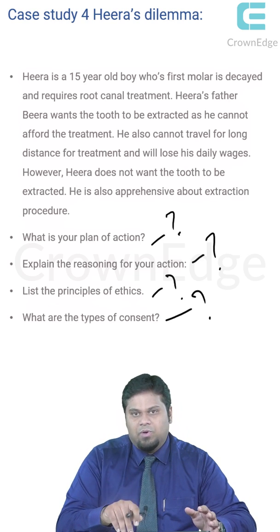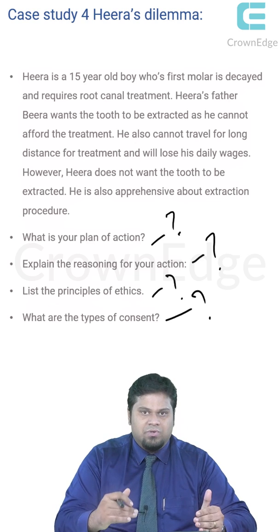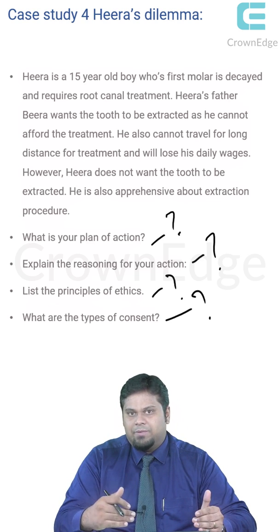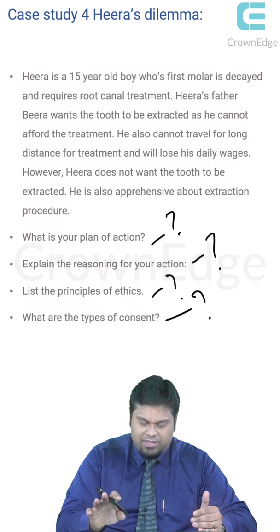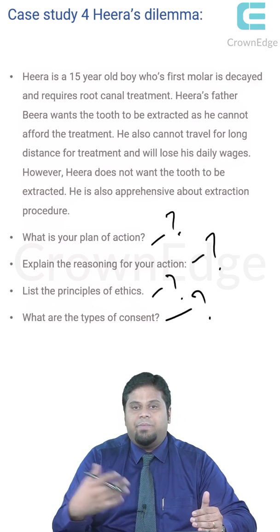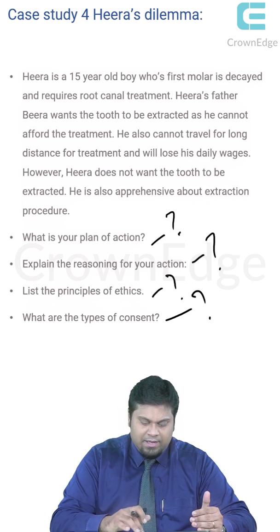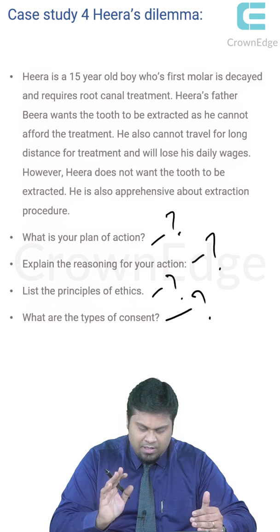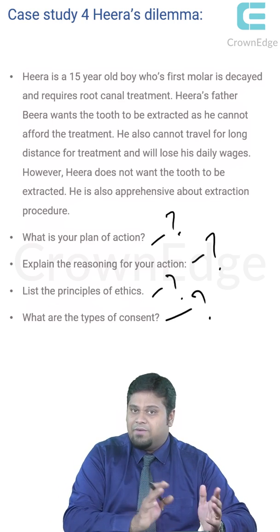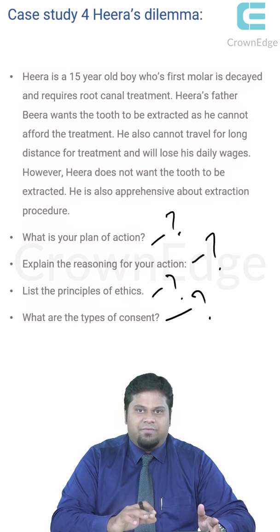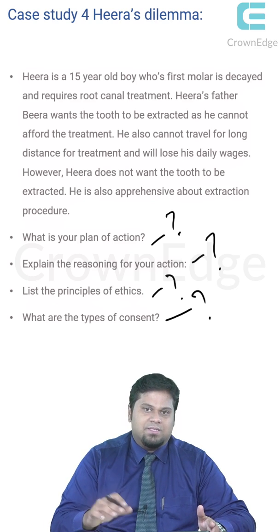Hira is a 15-year-old boy whose molar is decayed and requires root canal treatment — the doctor's recommended judicious decision. The patient's father says the tooth has to be extracted because he cannot afford the treatment or repeated visits, which would also cost him daily wages. We must determine the plan of action, justify the reasoning — why this is applicable and why we think this is the situation — and list the principles of ethics.